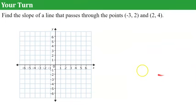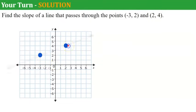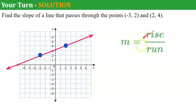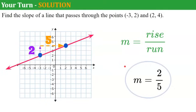Now it's your turn — find the slope of a line passing through these two points. Plot them and find the slope using rise over run, then come back to check your work. Welcome back. Plotting (-3, 2): left 3, up 2. Plotting (2, 4): right 2, up 4. Connect with a line. Starting at the leftmost point, rise 2 and run 5 — slope is 2/5. Be careful: students often flip the ratio, so make sure your rise (vertical) is the numerator.